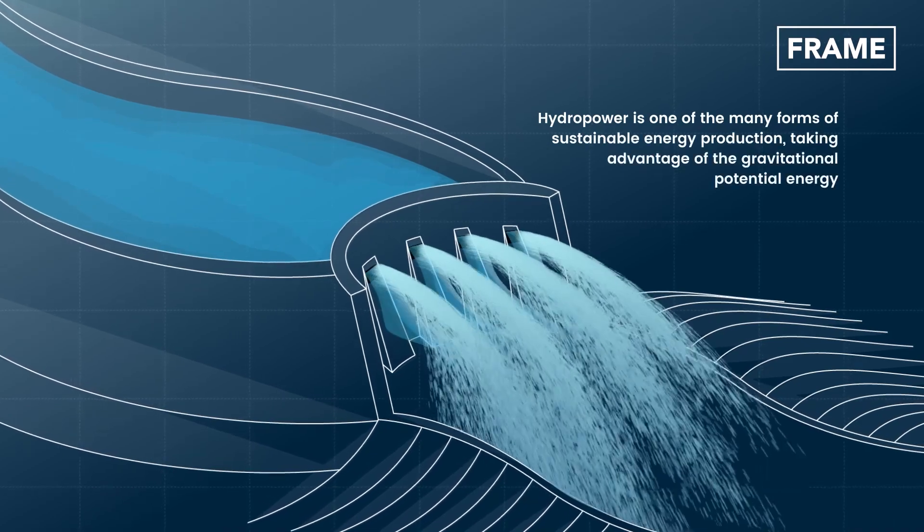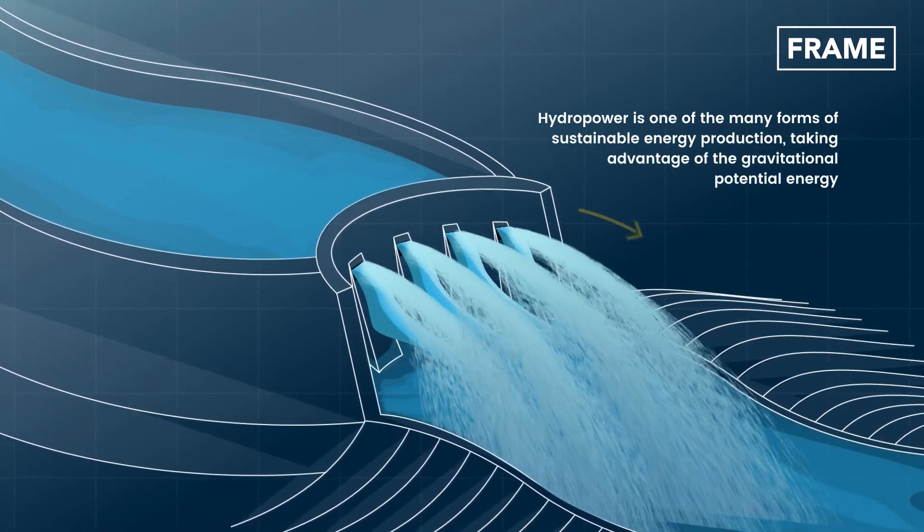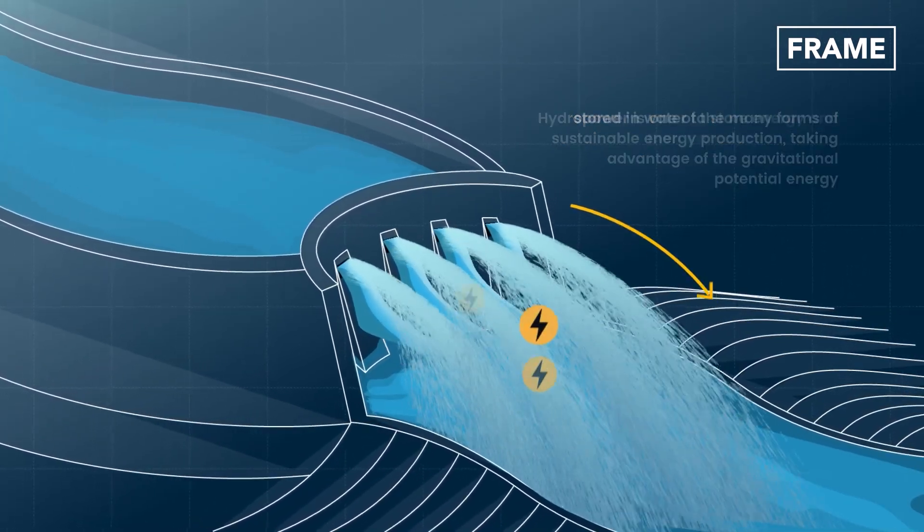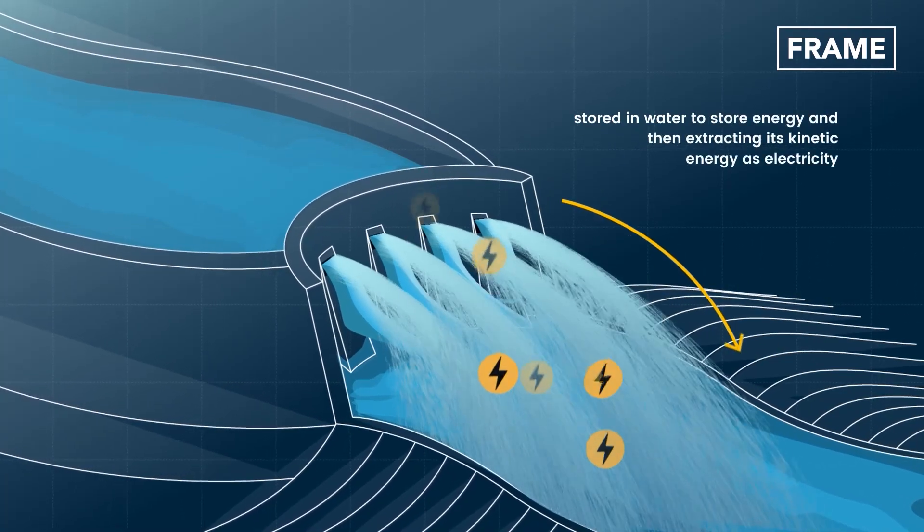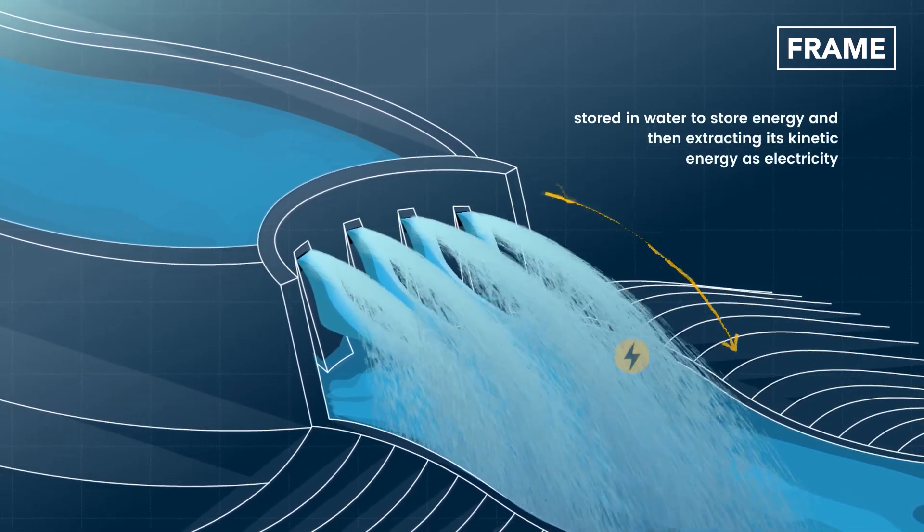Hydropower is one of the many forms of sustainable energy production, taking advantage of the gravitational potential energy stored in water to store energy and then extracting its kinetic energy as electricity.